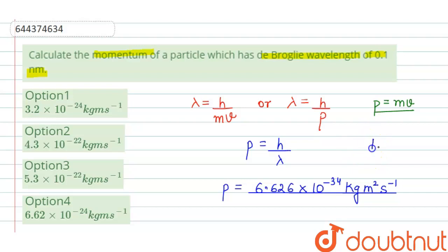We know that 1 nanometer equals 10 raised to the power minus 9 meters. So we will convert this 0.1 nanometer into meters, 10 raised to the power minus 9 meters.